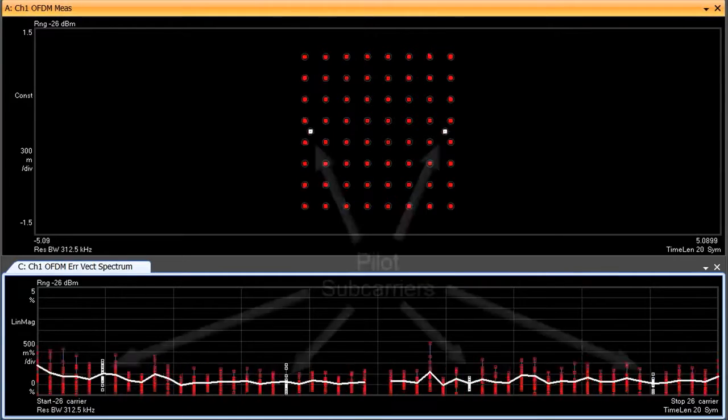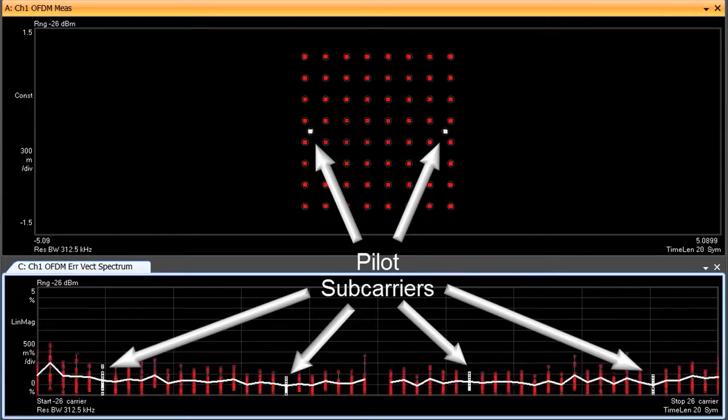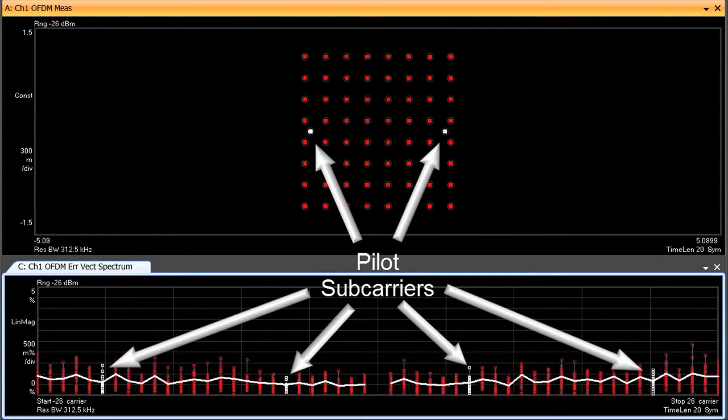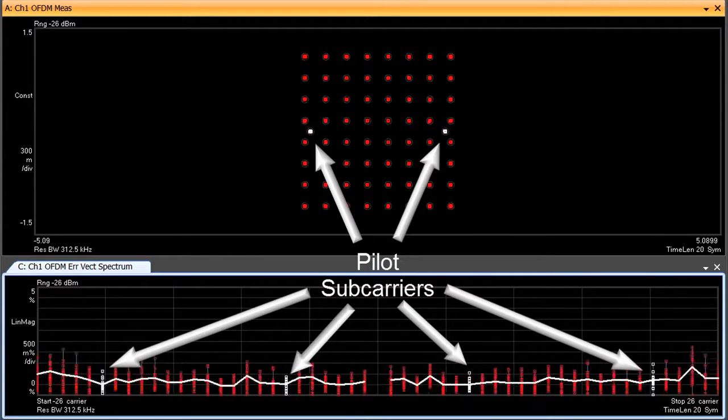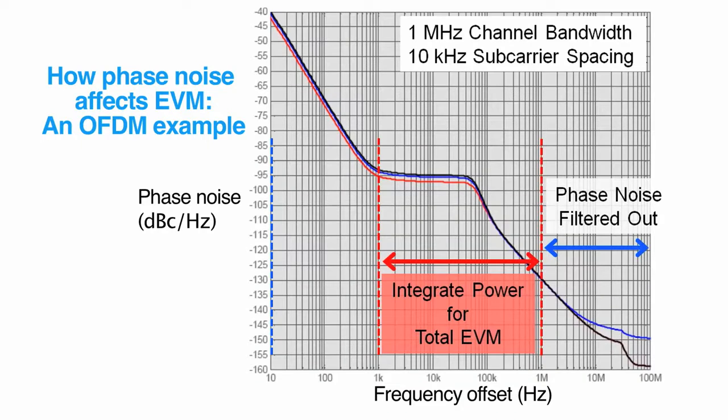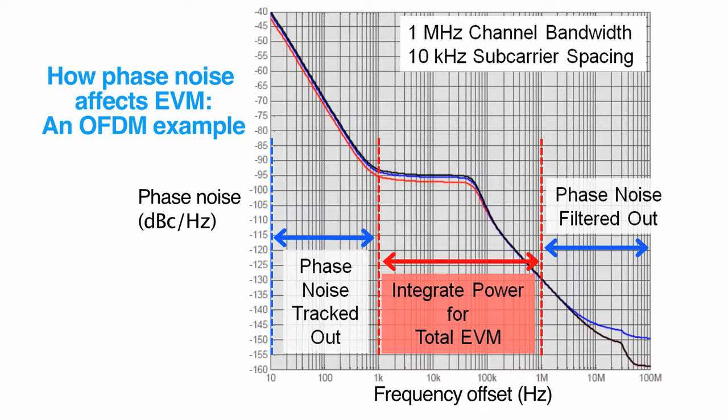Close-in phase noise is a special case with OFDM, since the pilot subcarriers share the same phase noise as the data subcarriers, allowing tracking algorithms to track out some of the close-in phase noise. This tracking is generally effective to about 10% of the subcarrier spacing, making some close-in phase noise less important in real-world systems.